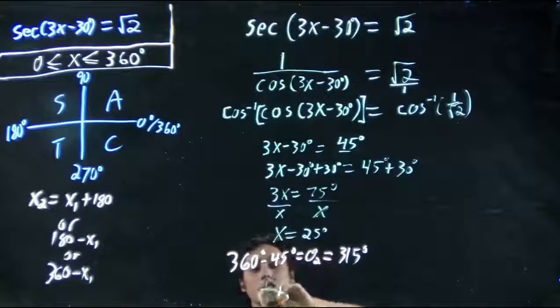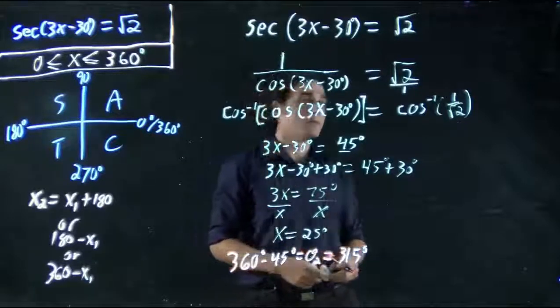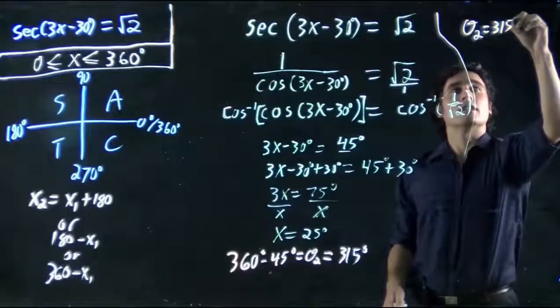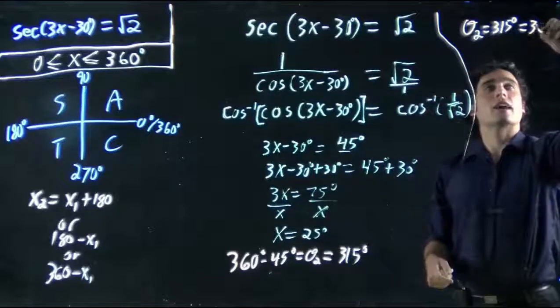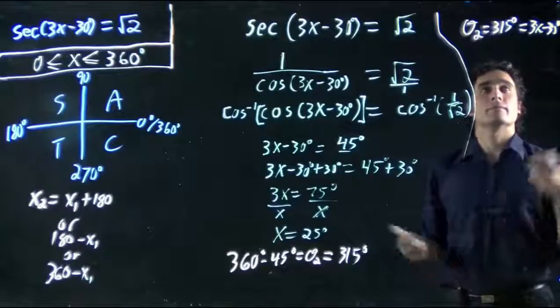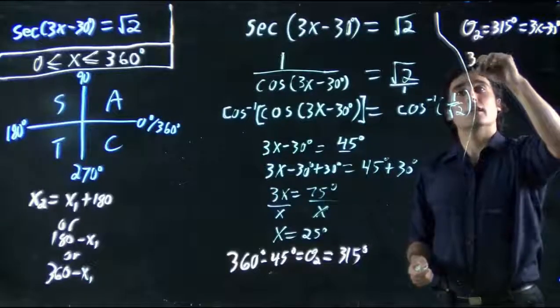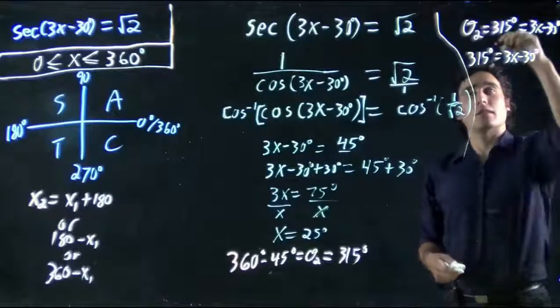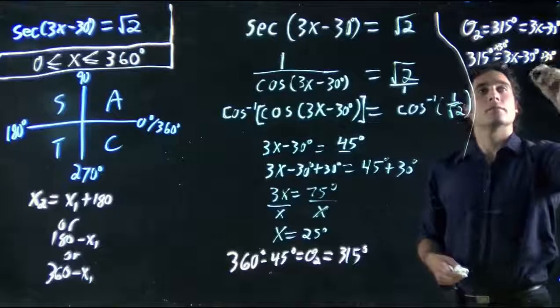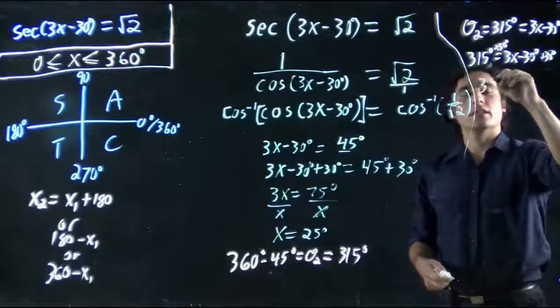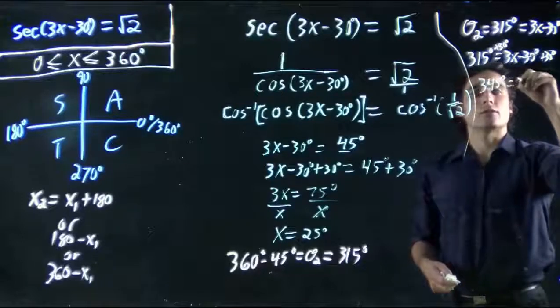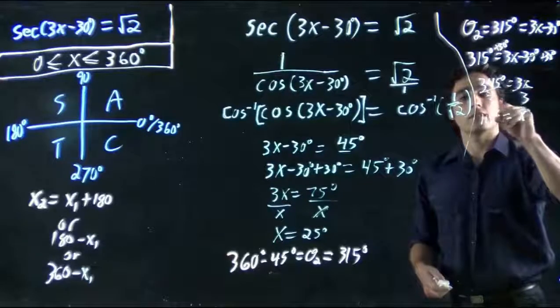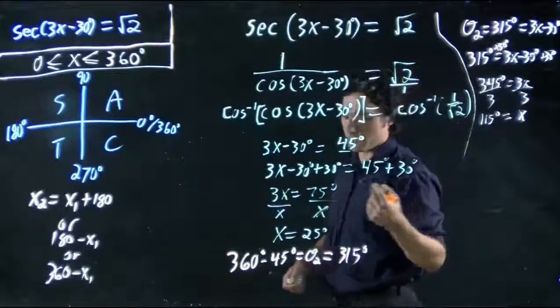This is actually equal to the entire term in the brackets. We can think theta 2. So, 315 degrees equals 3x minus 30 degrees. Well, we basically want to add 30 degrees to both sides. We get 345 degrees equals 3x. Divide both sides by 3, x equals 115 degrees. It's another viable solution.